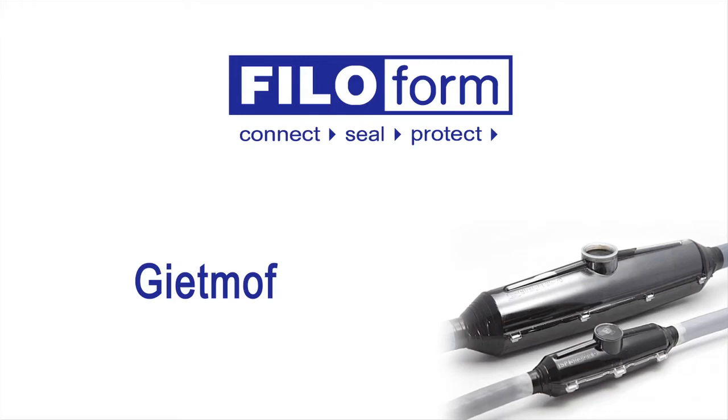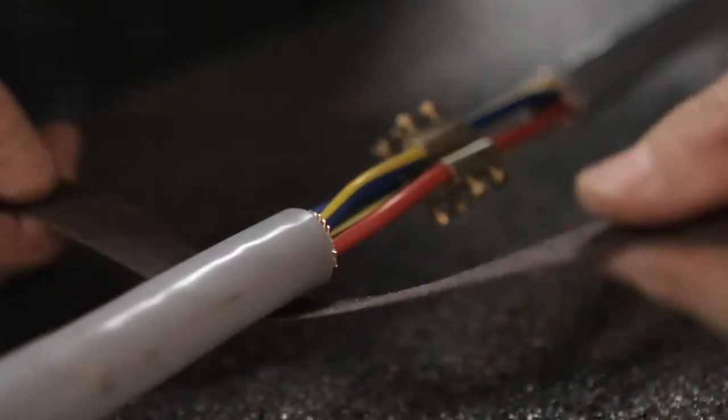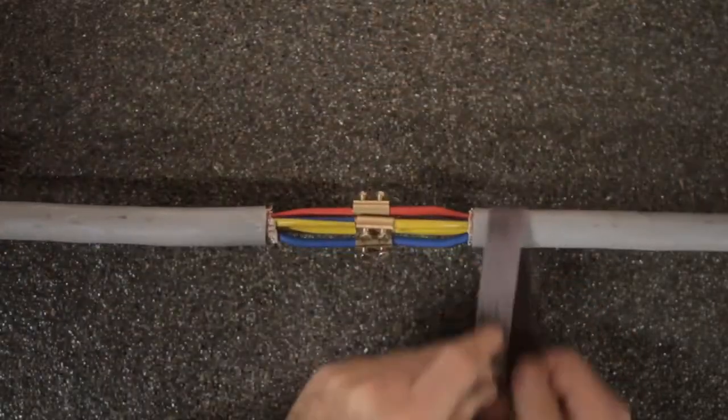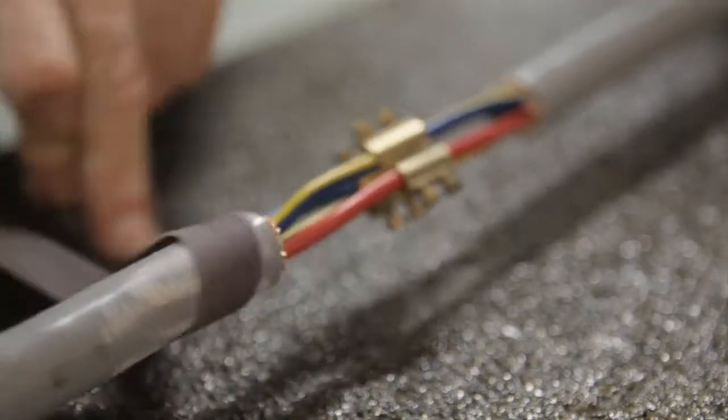With the use of Phyloform cast resin joints, you will create perfect protection for underground low voltage cable connections. For good adhesion of the resin, the cable sheets should be cleaned and sanded.